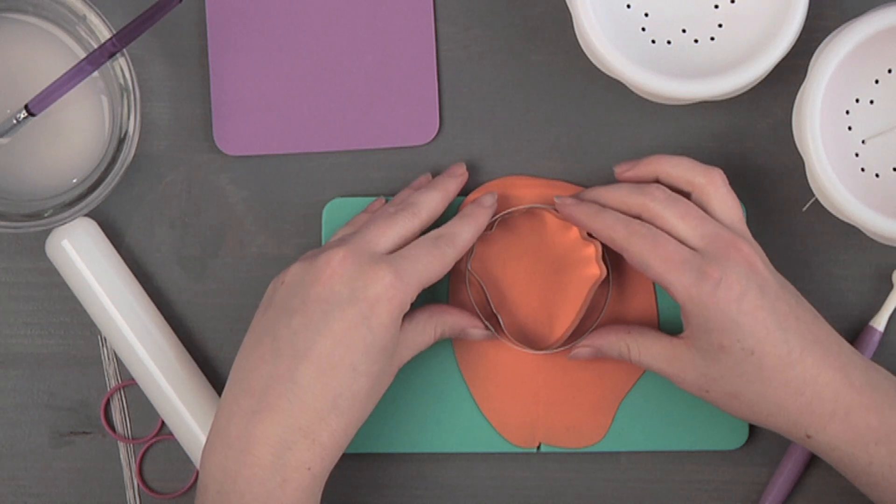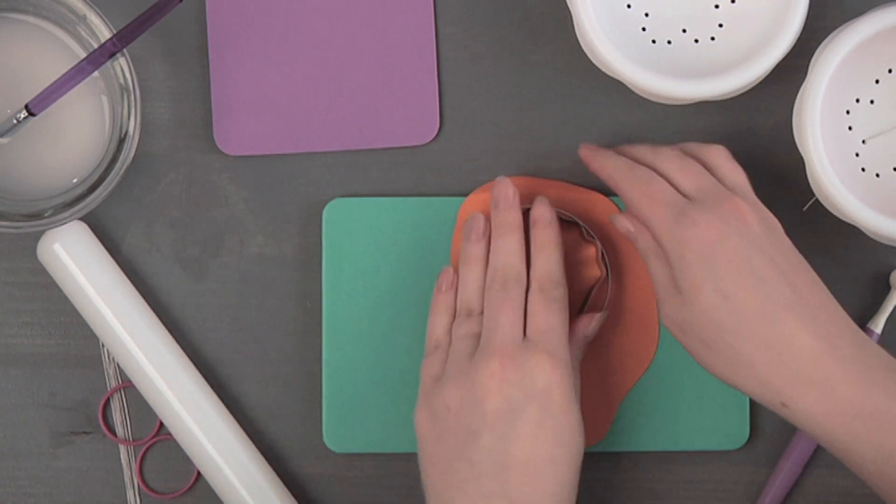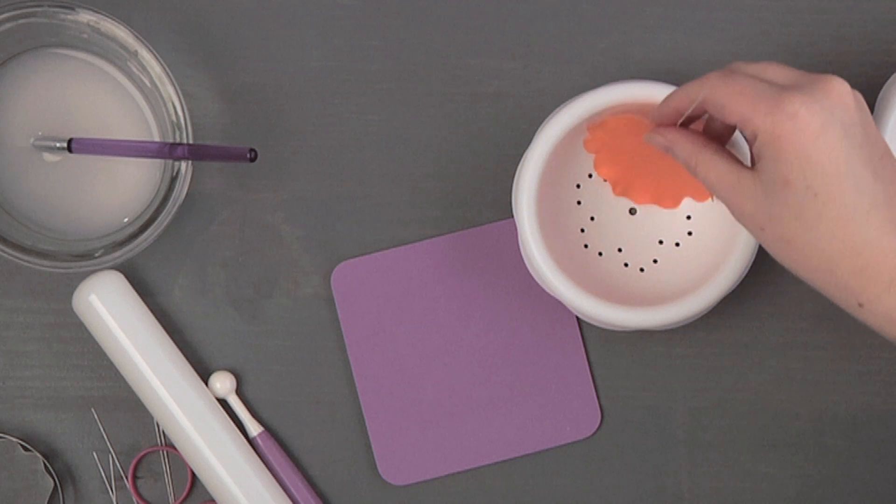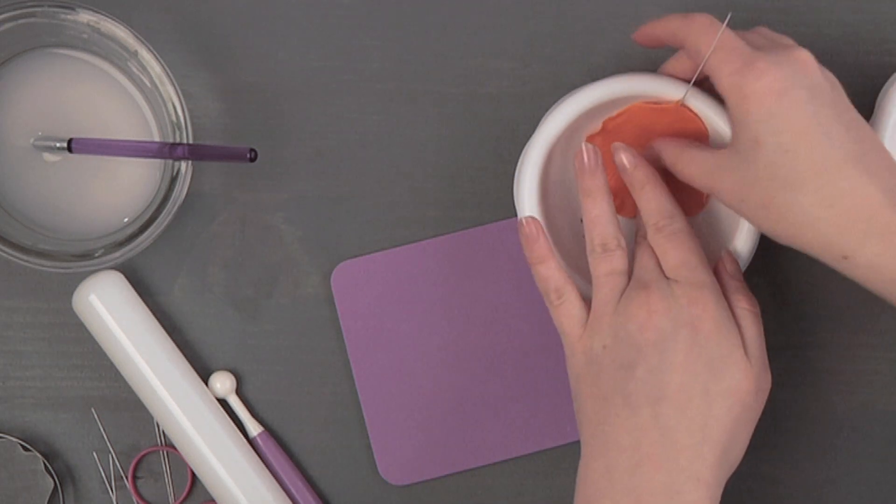For the inner petals, cut, wire, and ruffle two more petals. Position the petal in the bottom of a dusted flower forming bowl and let dry.